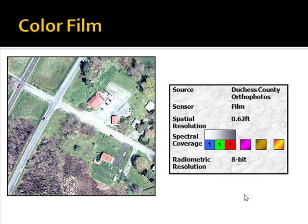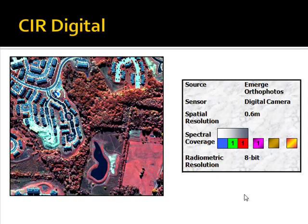Most scanned film products have 8-bit radiometric resolution. Here is another example of aerial photography, but in this case a digital imaging system was used — the advantage being that the imagery does not have to be scanned. This is from a company called Emerge, looking at the Baltimore, Maryland region. This sensor specifically has green, red, and near-infrared bands, so what we're looking at is a color infrared composite, with pixels having values from 0 to 255, making it an 8-bit system.